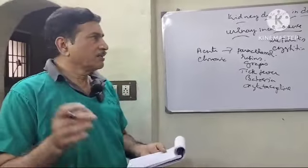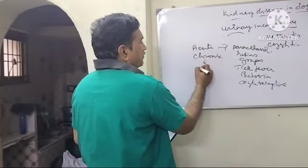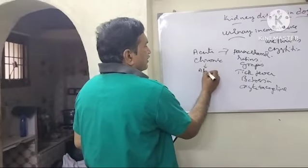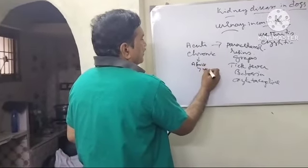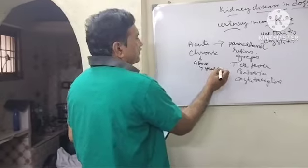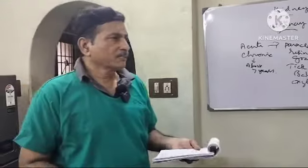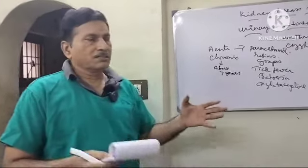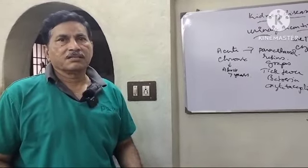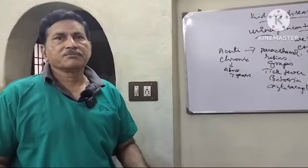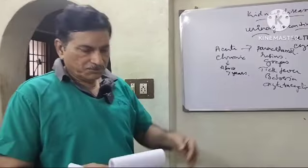Chronic kidney disease is more common in older dogs. Dogs over seven years of age are at risk. Signs include blood in urine, urinary incontinence, difficulty controlling urination, and edema of the limbs.